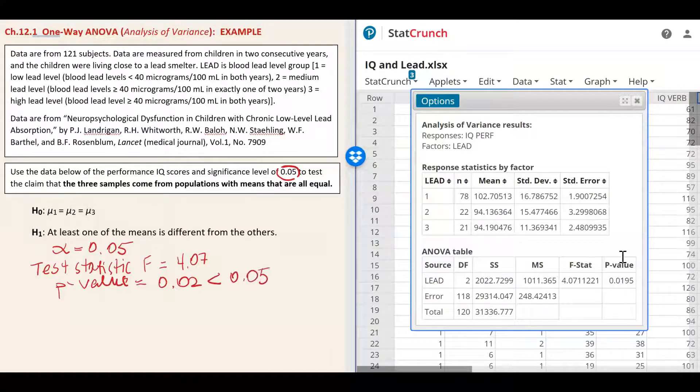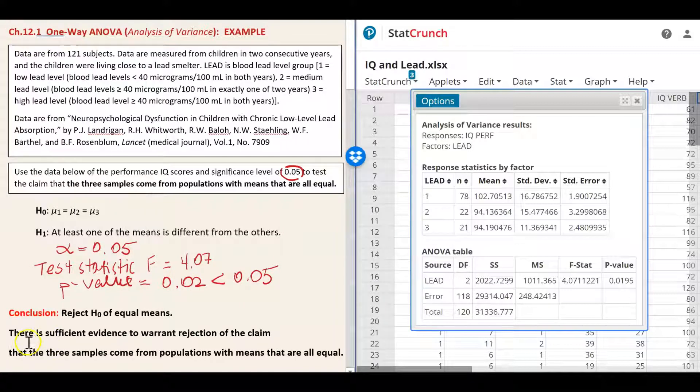And say that there is sufficient evidence to warrant rejection of the claim that the three samples come from populations with means that are all equal. Using the samples of measurements listed we conclude that those values come from populations having means that are not all the same. Let's look at the means. As you can see one mean is slightly higher than the other two means.